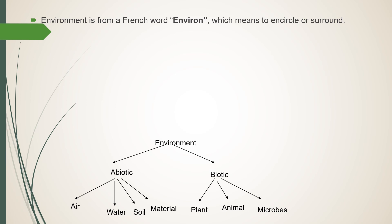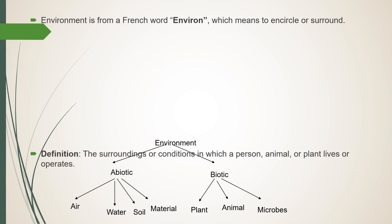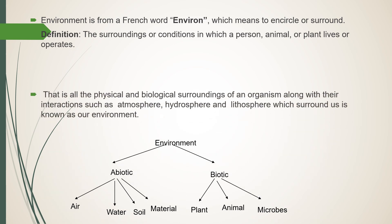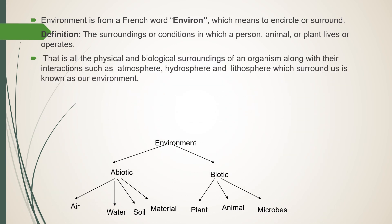Environment is from a French word 'environ' which means to encircle or surround. The surroundings or conditions in which a person, animal or plant lives or operates — that is, all the physical and biological surroundings of an organism along with their interactions such as atmosphere, hydrosphere and mesosphere which surrounds us — is known as our environment.